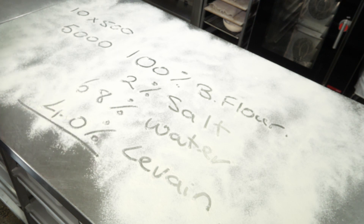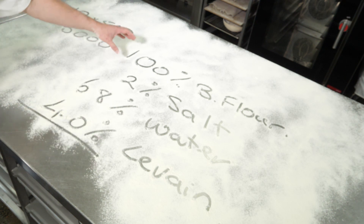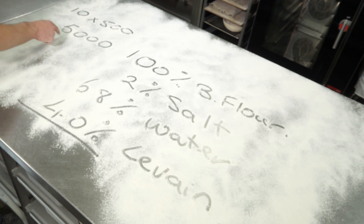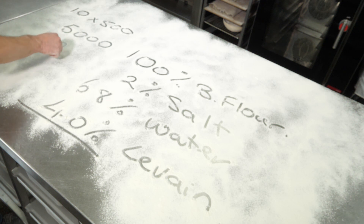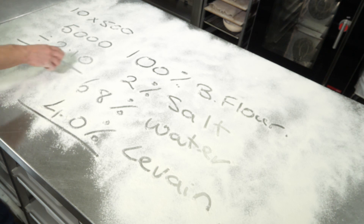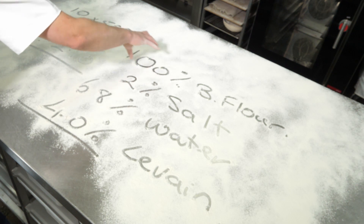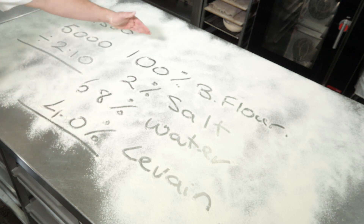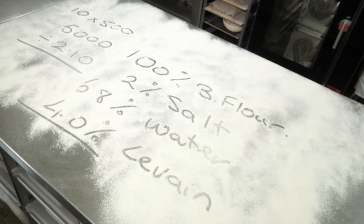What we do is we add up all of our percentages: 100, plus 2, plus 68, plus 40 — that gives us 210. We move the decimal point and then divide 5,000 by 2.10, and the answer to that equals the amount of flour you need. Once you've worked out the 100%, you then work out 2%, 68%, and 40% of that flour amount — and that's the formula to make 10 loaves at 500 grams each.